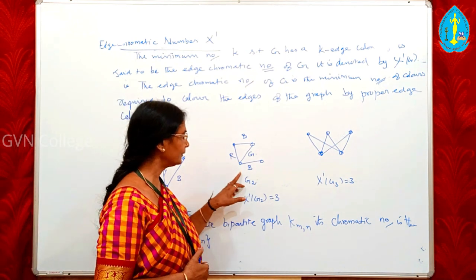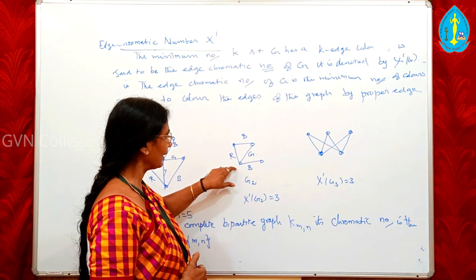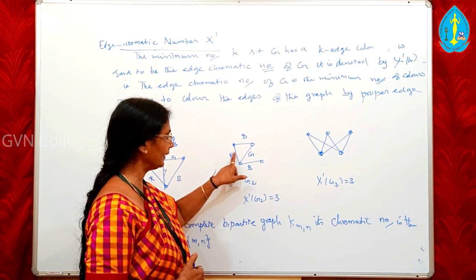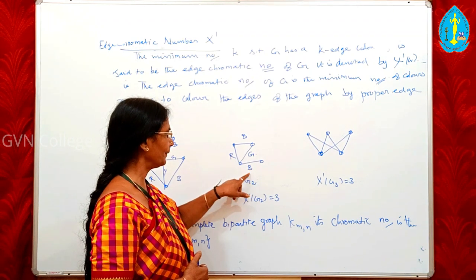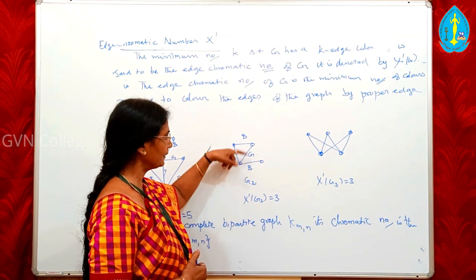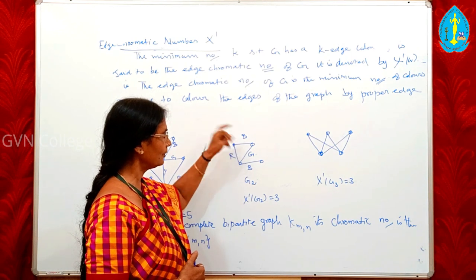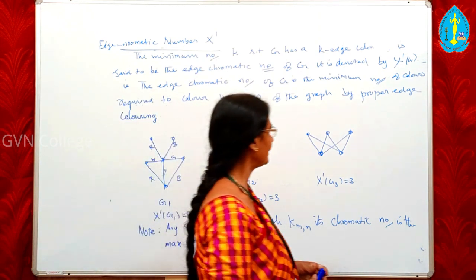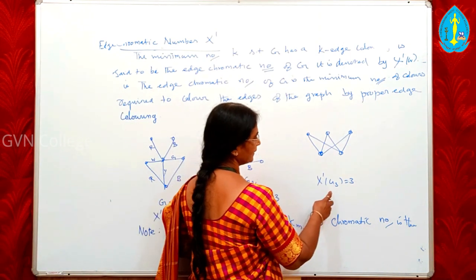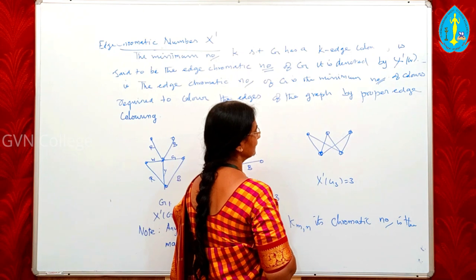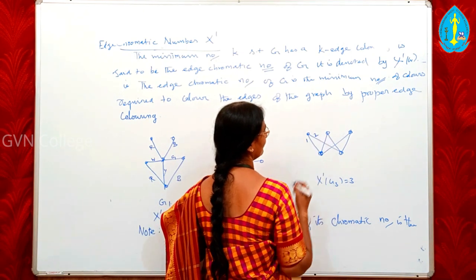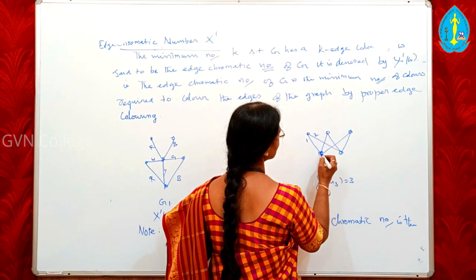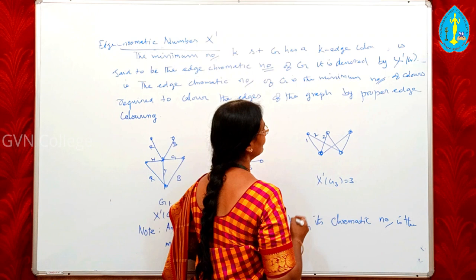Now consider G2: the maximum degree of a vertex is 3, so we need 3 colours — R, G, B. Therefore χ'(G2) = 3. For G3, we assign colours 1, 2, 3 to the edges such that no two adjacent edges share a colour, and since colour 2 is not adjacent with colour 1, we can reuse them appropriately.